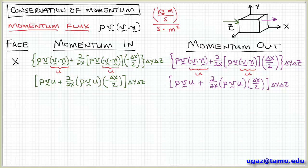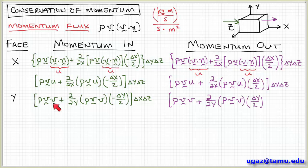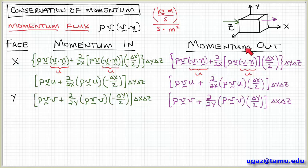Continuing this analysis for the other two faces — on the top and bottom faces that have normals in the y direction. On the bottom I have rho v times the scalar v (the y component of velocity), plus the partial with respect to y of rho v times the distance from the center to the bottom face, minus delta y over 2, times the area of that face, delta x delta z. Then I get the corresponding expression for the top face.